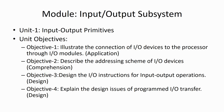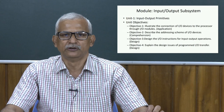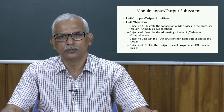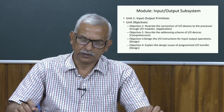For Unit 1 — I/O primitives — the objectives are: first, illustrate the connection of I/O devices to the processor through I/O modules (application level); second, describe the addressing scheme of I/O devices; third, design the I/O instruction for input/output operations — when designing a processor's instruction set, you need instructions to handle I/O devices; and fourth, explain the design issues of programmed I/O transfer (design level).